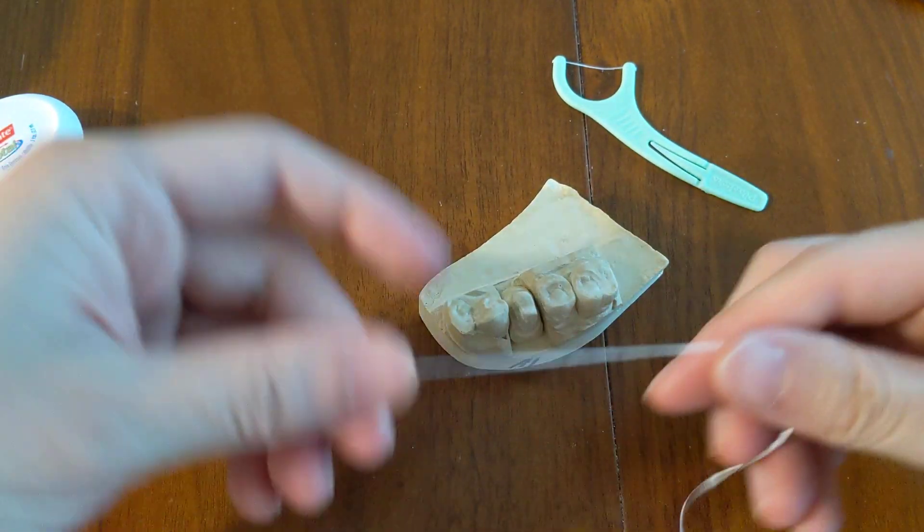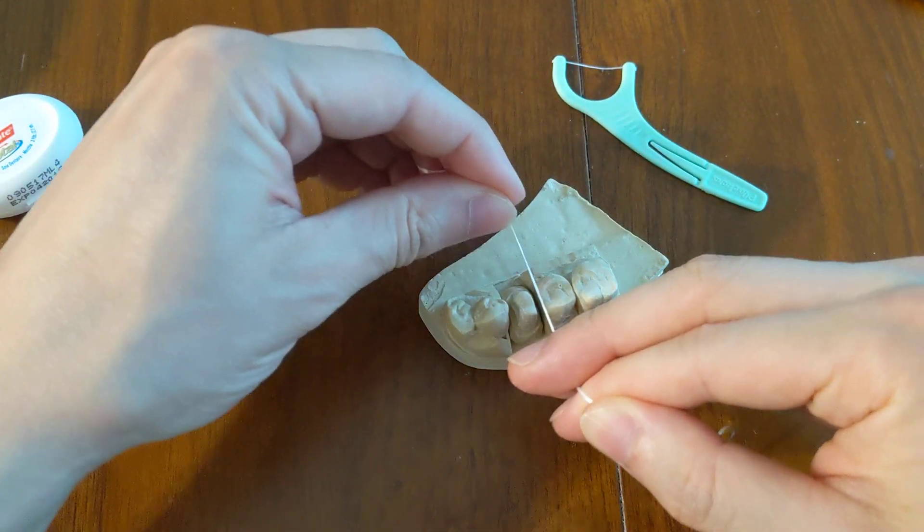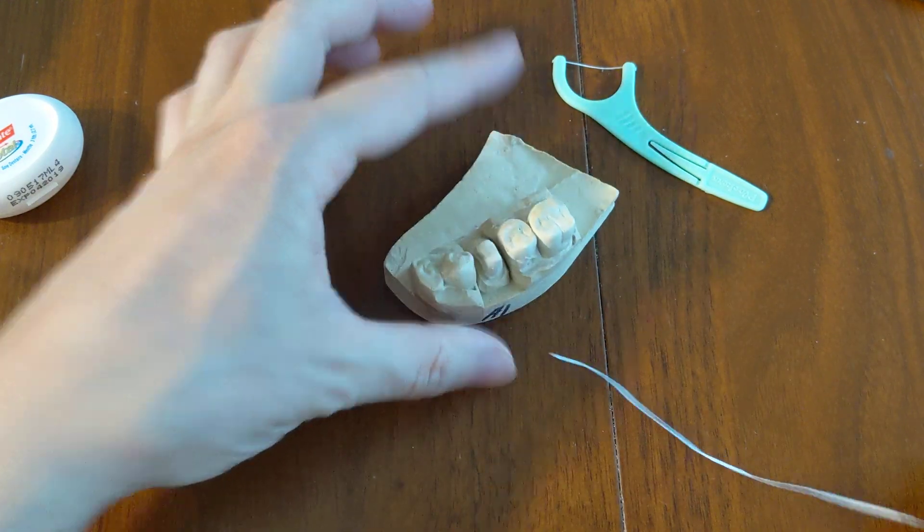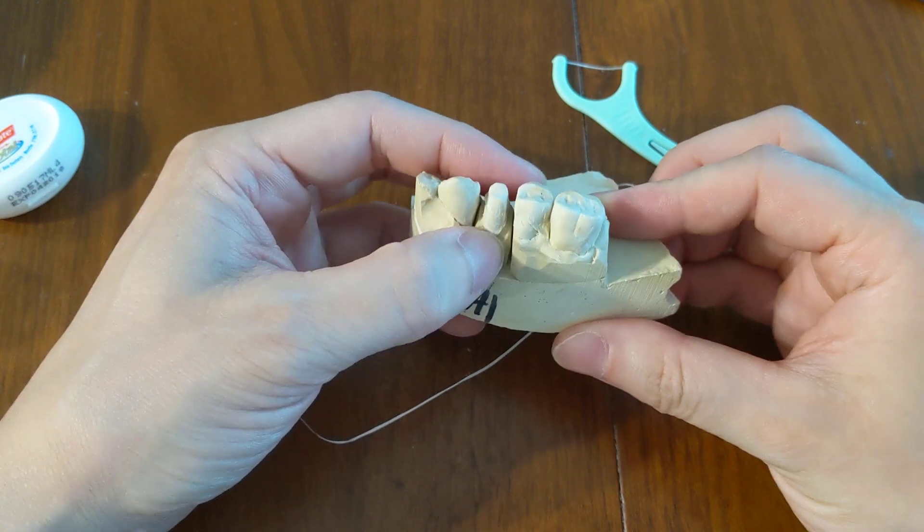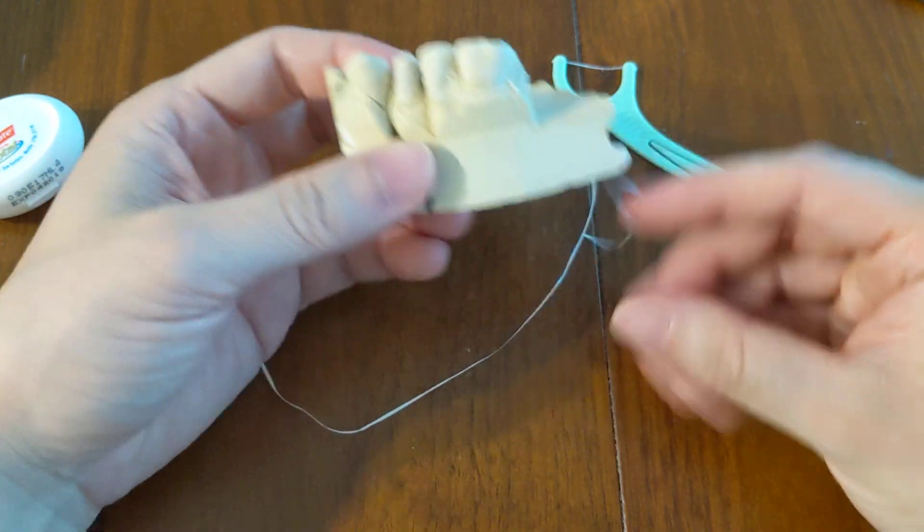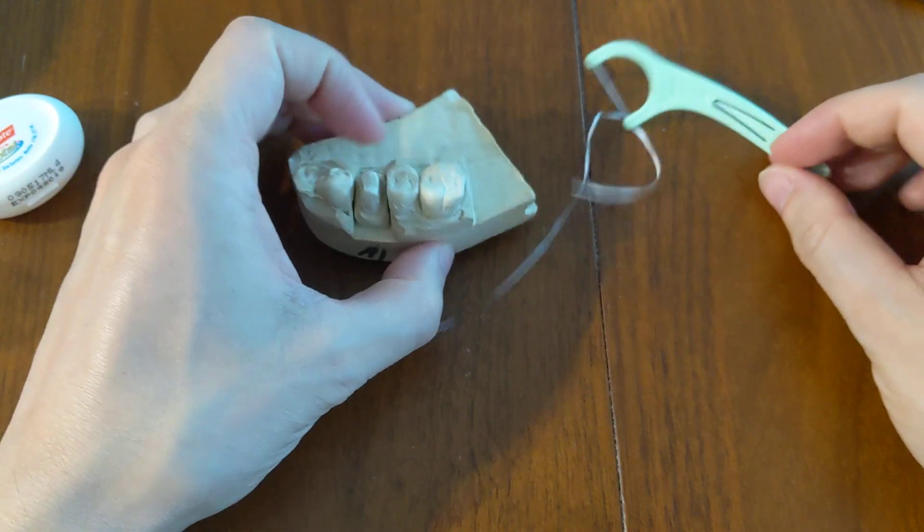If you're going to floss, use a string floss. Floss through but pull out to the side. If you can't do that for whatever reason, I would much rather you not floss while you have the temporary on, so you don't risk popping it off.